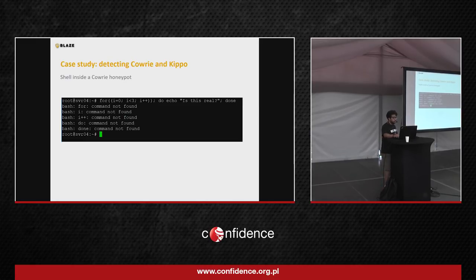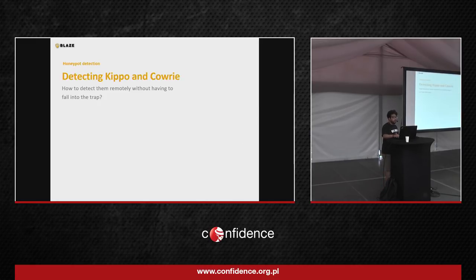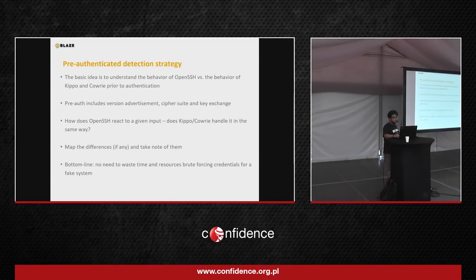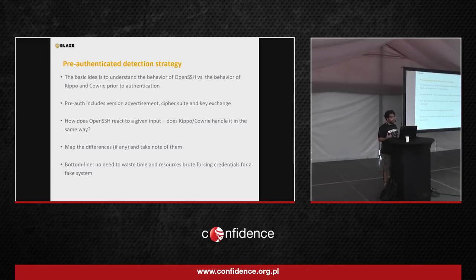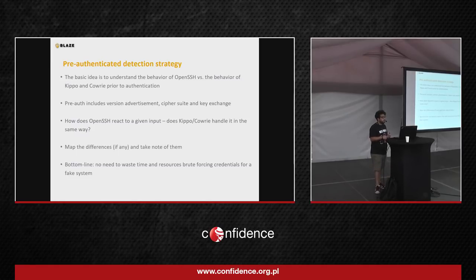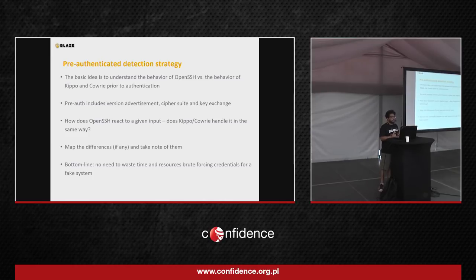The basic idea was to understand the behavior of OpenSSH versus Kippo and Cowrie from a pre-authentication perspective. In pre-authentication we have cipher suite advertisement, banner advertisement, compression algorithms, and so on — basically the whole key exchange and initial handshake.